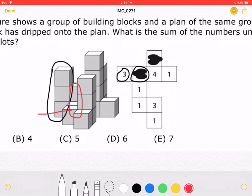If we look at it from the side, we will see that that is equal to 2 blocks. There must be a 2 there. Now let's look at where this ink dripped.